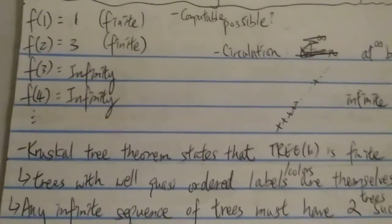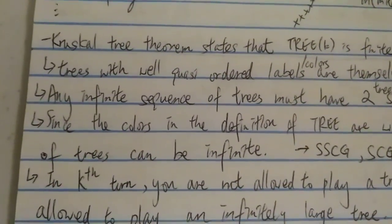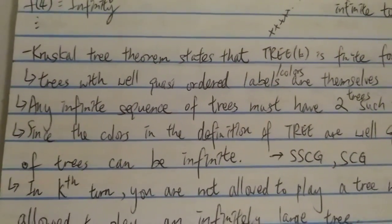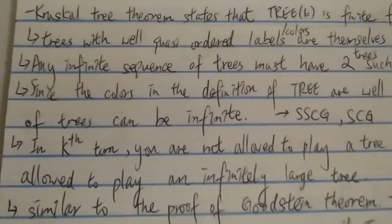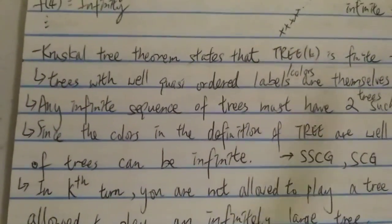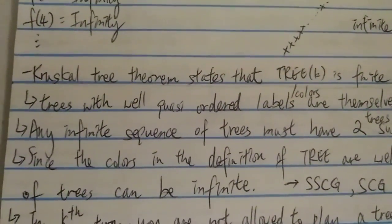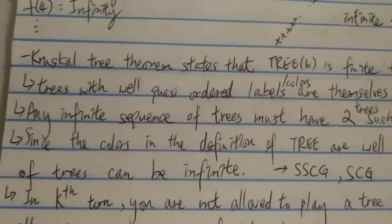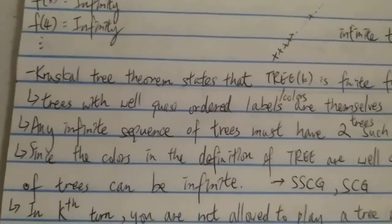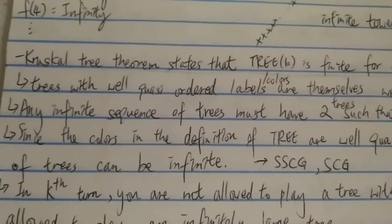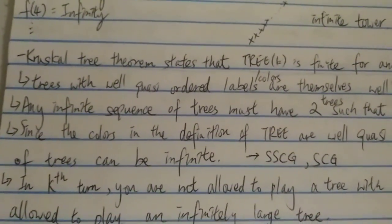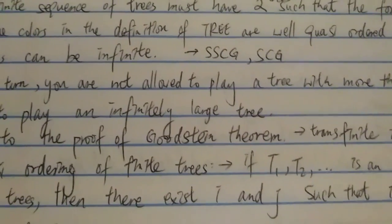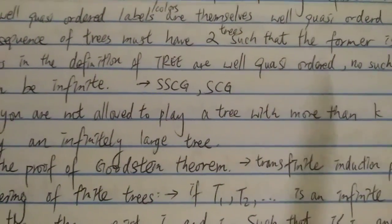So in order to prove TREE(3) or TREE(4) is finite, you have to prove this theorem. As you may have seen in Numberphile videos or online articles, to prove the Kruskal tree theorem you have to use transfinite ordinals. If you try to use only finite arithmetic without ordinals, just for TREE(3) itself you would need something like two double-arrow a-thousand symbols, which is basically impossible in the physical world. So no one has ever proved TREE(3) is finite using just regular arithmetic.